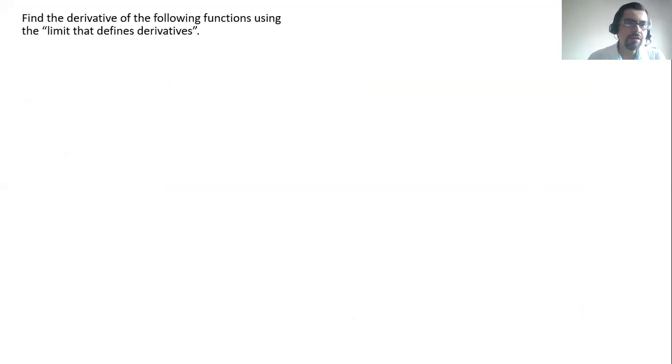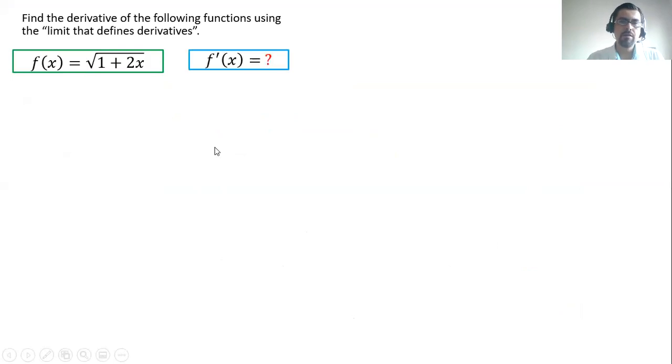So the structure says, find the derivative of the following function using the limit that defines derivatives. We're given this function f equals the square root of 1 plus 2x. The challenge is to find f prime, which is the derivative.